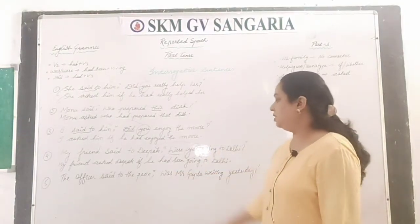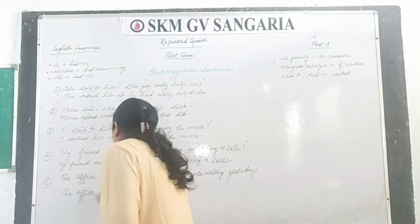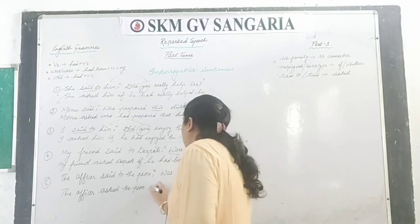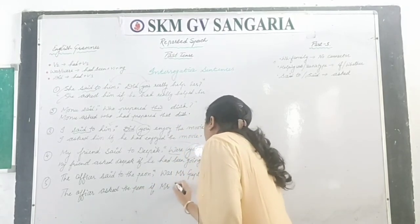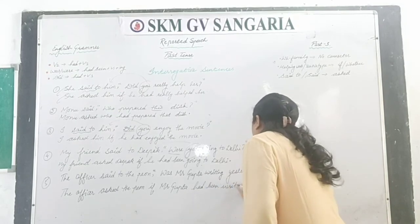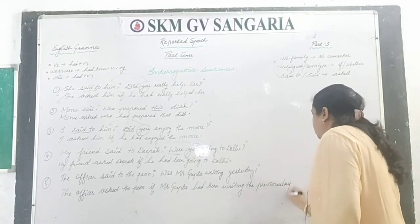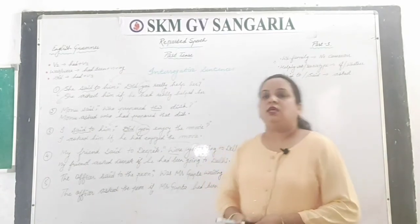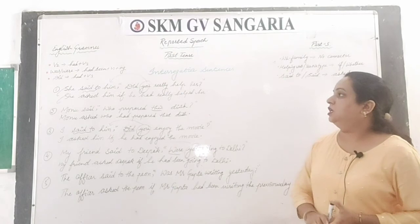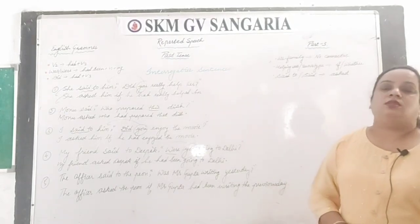The officer said to the PN, 'Was Mr. Gupta writing yesterday?' Answer: the officer asked the PN if Mr. Gupta had been writing the previous day. So like this you have to solve exercises of reported speech when sentences are in interrogative form of past tense. Please take screenshots, note this down in your notebook, and practice such exercises. Thank you very much.